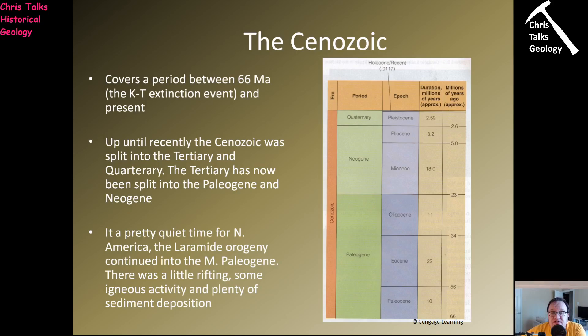The Cenozoic extends from 66 million years ago to the present day. The 66 million year boundary — essentially the boundary between the Cenozoic and the Mesozoic — is marked by the KT mass extinction, when an asteroid smashed into the Yucatan Peninsula in what is now modern-day Mexico, producing a nuclear winter which did significant damage to life on Earth. In the Mesozoic we have species like ammonites and dinosaurs in the fossil record, and then as we pass into the Cenozoic, those species are gone.